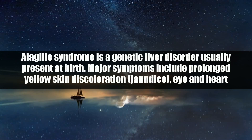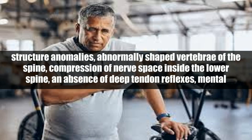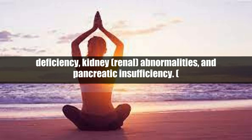Alagille syndrome is a genetic liver disorder usually present at birth. Major symptoms include prolonged yellow skin discoloration (jaundice), eye and heart structure anomalies, abnormally shaped vertebrae of the spine, compression of nerve space inside the lower spine, an absence of deep tendon reflexes, mental deficiency, kidney and renal abnormalities, and pancreatic insufficiency.